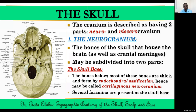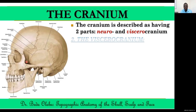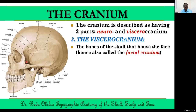That was the neurocranium — the bones that house the brain. The second major part of the cranium is the viscerocranium, which refers to the bones of the skull that house the face, constituting what is called the facial cranium. When talking about the bones of the facial skeleton, we have the zygomatic bone, the maxilla, the nasal bone, and others. The mandible, the lower jaw, is not part of the cranium strictly, but it is part of the facial skeleton, so we consider it part of the viscerocranium.